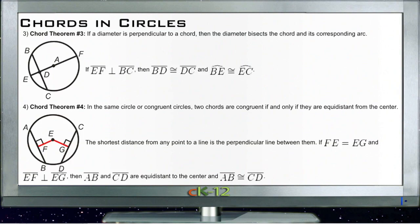Alright, so theorem 3 tells us that if a diameter is perpendicular to a chord, then the diameter bisects the chord and its corresponding arc. So this one is the reverse of the last one.